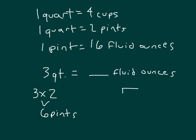Drawing a picture to visualize this, if we had our 3 quarts, we know that each of those quarts is worth 2 pints. And then each of those pints is worth 16 fluid ounces. So we'll have a conversion factor of 16 for each of those 2 pints.